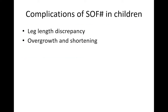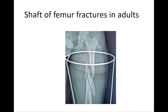Complications of shaft of femur fractures in children include limb length discrepancy. As children grow, there may be shortening of the affected limb, and sometimes lengthening of the normal limb. There can be both overgrowth and shortening.